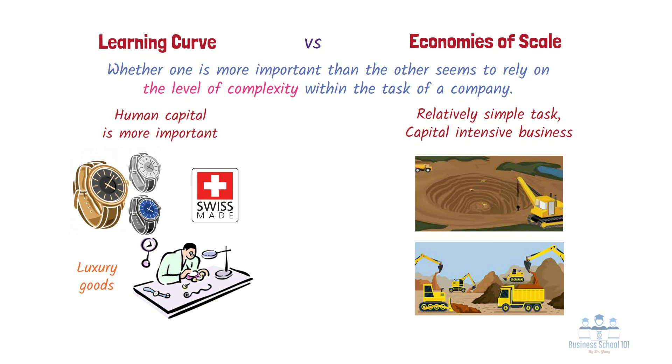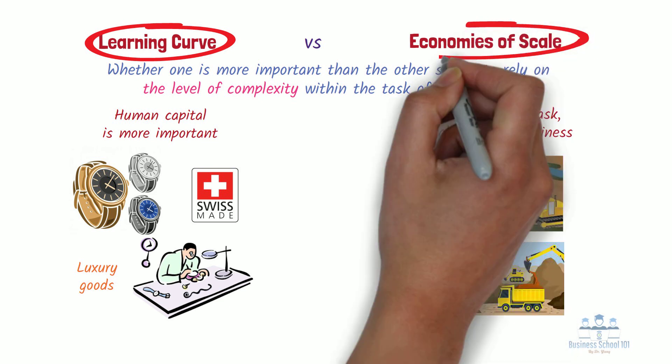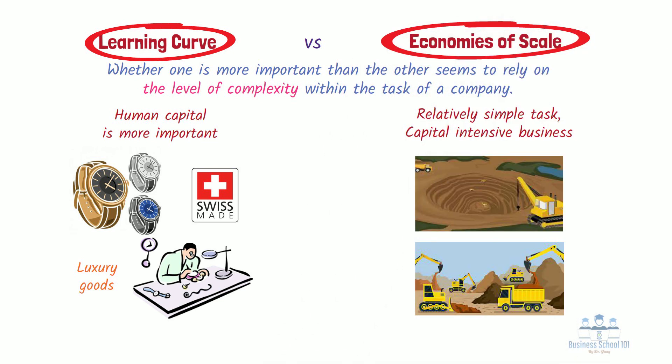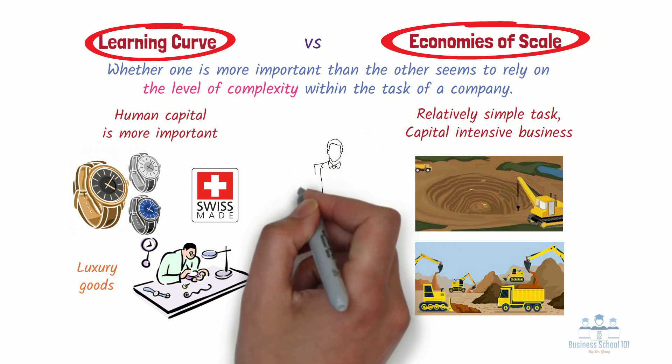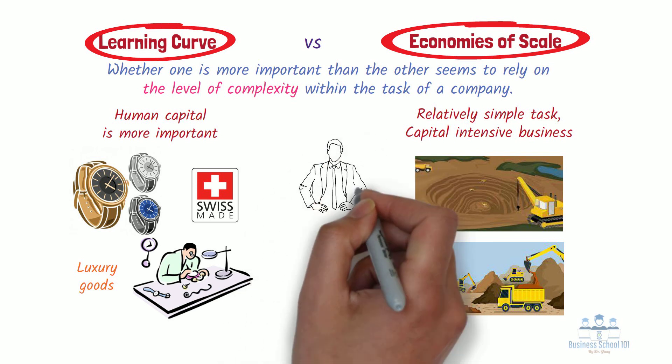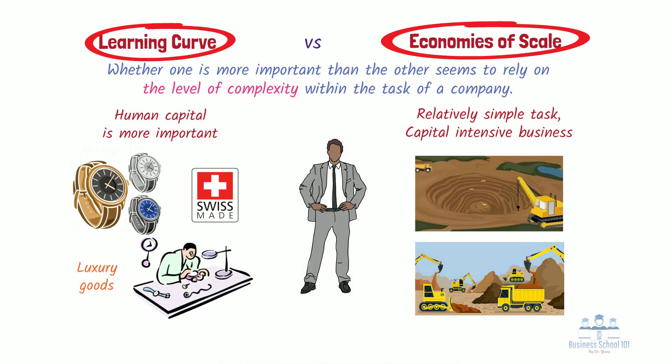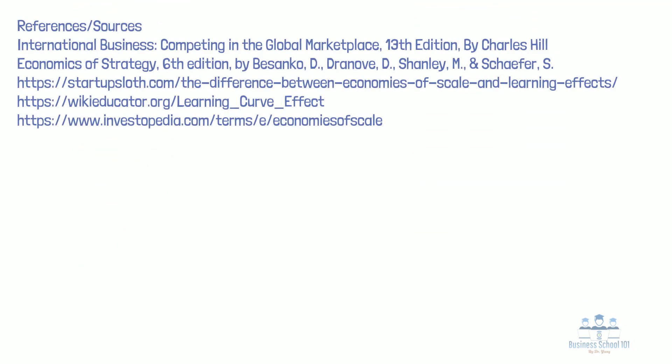With these two examples, it becomes possible to say that both the learning curve and economies of scale are critical to the success of companies. The important difference is the human factor in determining which one will be more important. Do you have any thoughts or questions about the learning effect and economies of scale? Please leave your thoughts in a comment below. Thanks for watching, and I will see you next time.